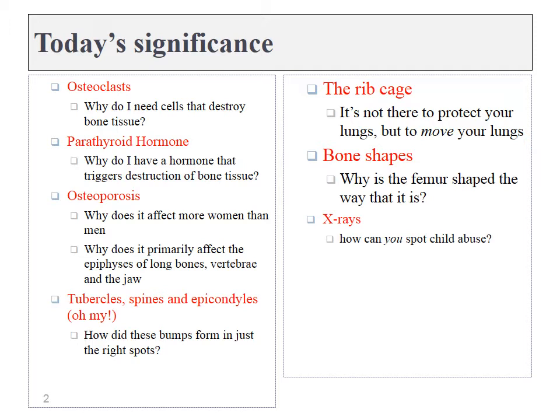Next up, we'll talk about tubercles, spines, and epicondyles. It always amazed me that muscles and their tendons knew exactly where to connect on the bones — they never missed those bumps and attached off to the side. We'll talk about the ribcage today. Anatomists love to assign jobs to different parts of the body, and the ribcage moves the lungs. It doesn't do a very good job of protecting the lungs and heart. We'll also talk about bone shapes and x-rays, and how you can spot signs of child abuse even years after it has occurred.